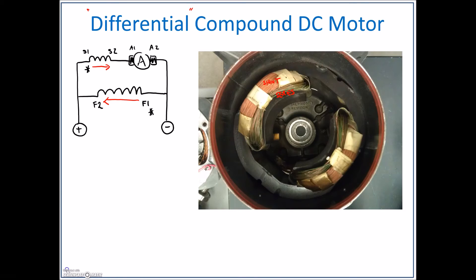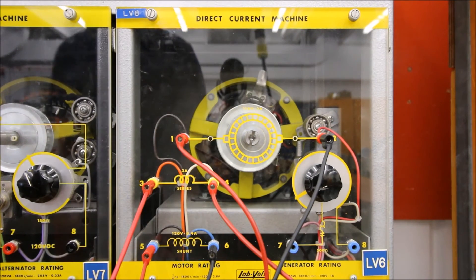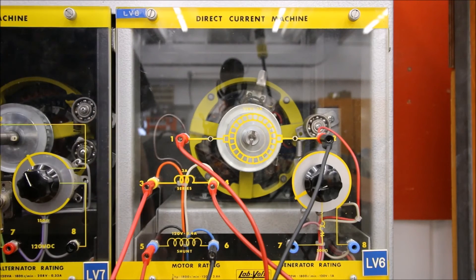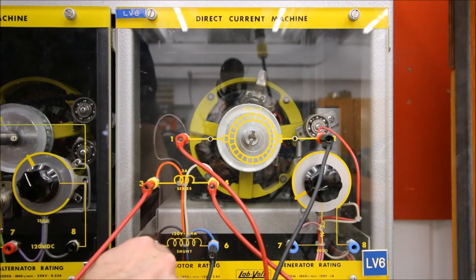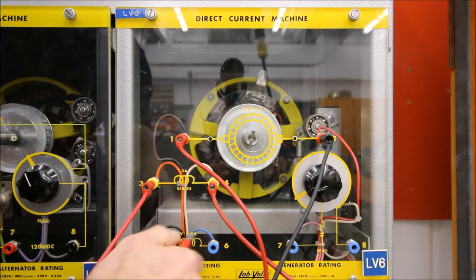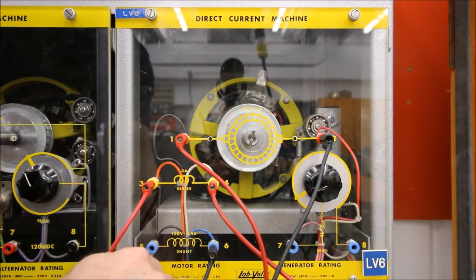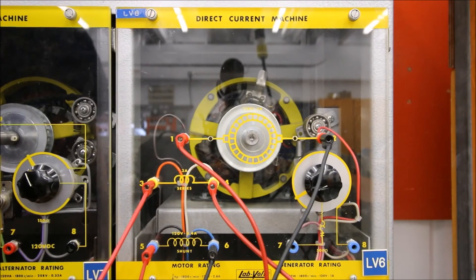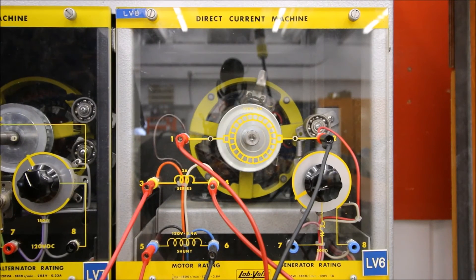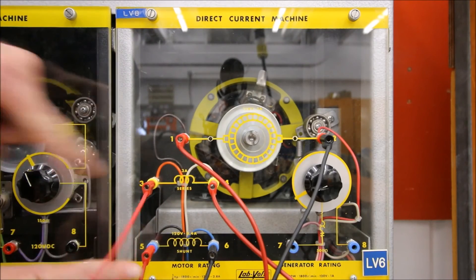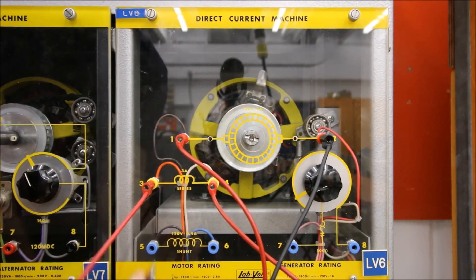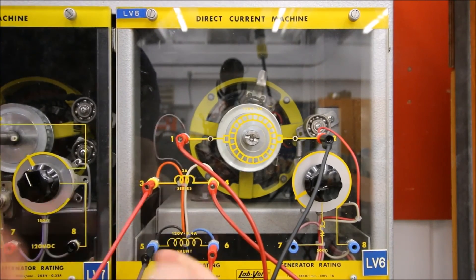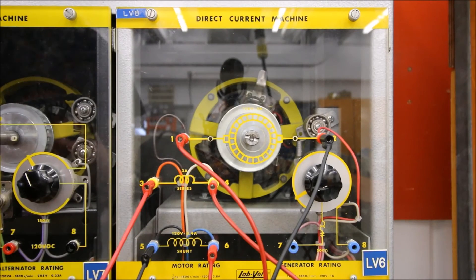Okay, we had the cumulative compound. Let's take a look at the differential compound. Differential compound means that one of the windings between the series and the shunt is going in the opposite direction. Let me show you normal operation. This is normal operation for the cumulative compound, meaning the series and the shunt are both having their magnetic fields going in the same direction. But I'm going to change the polarity of the shunt so the shunt is now going in the opposite direction of the series.